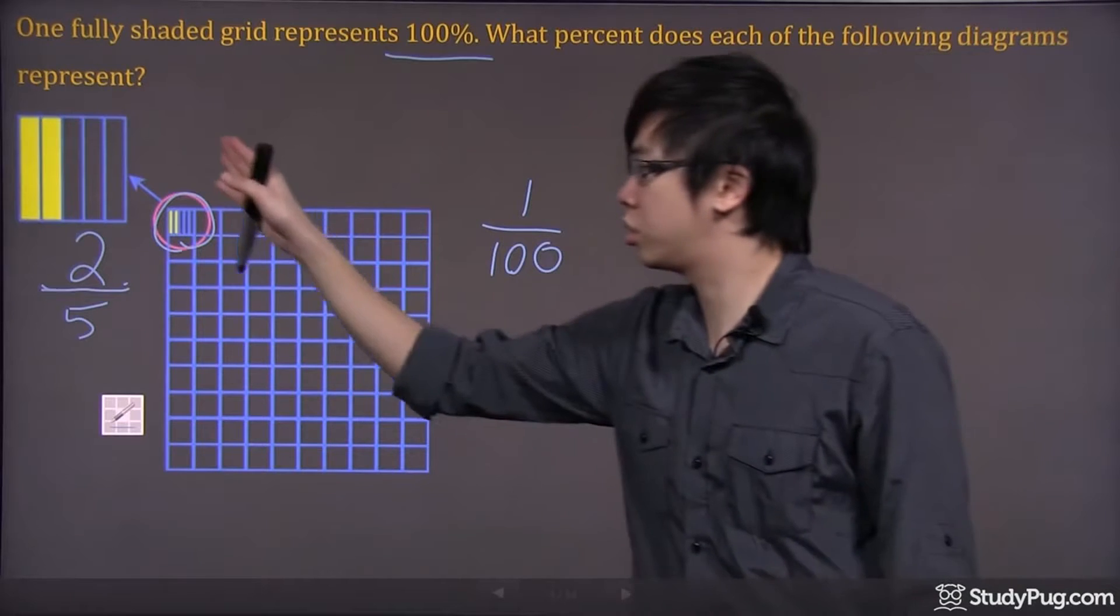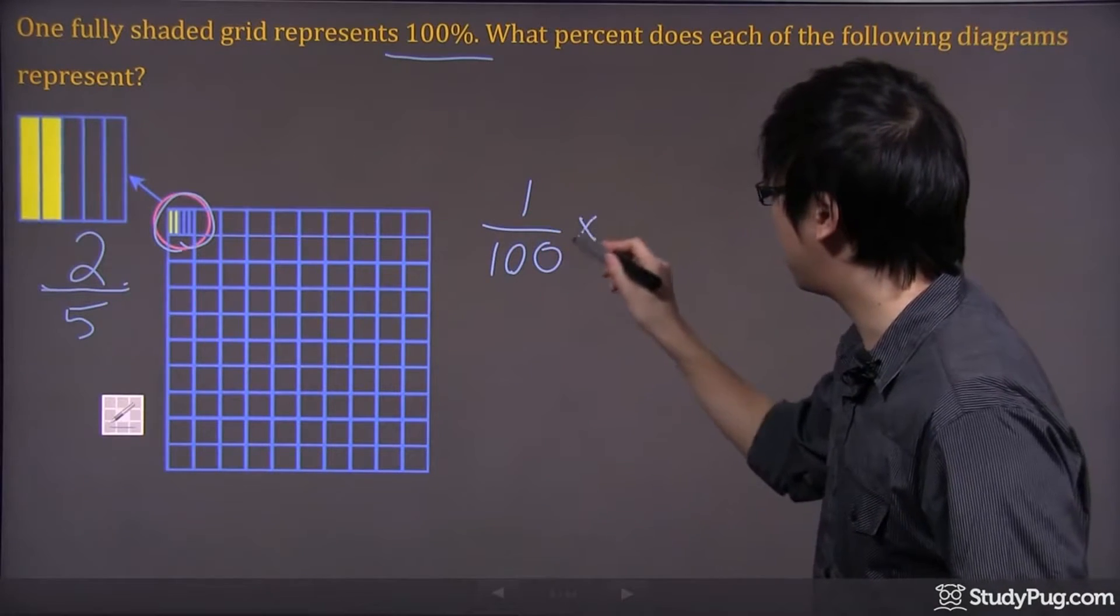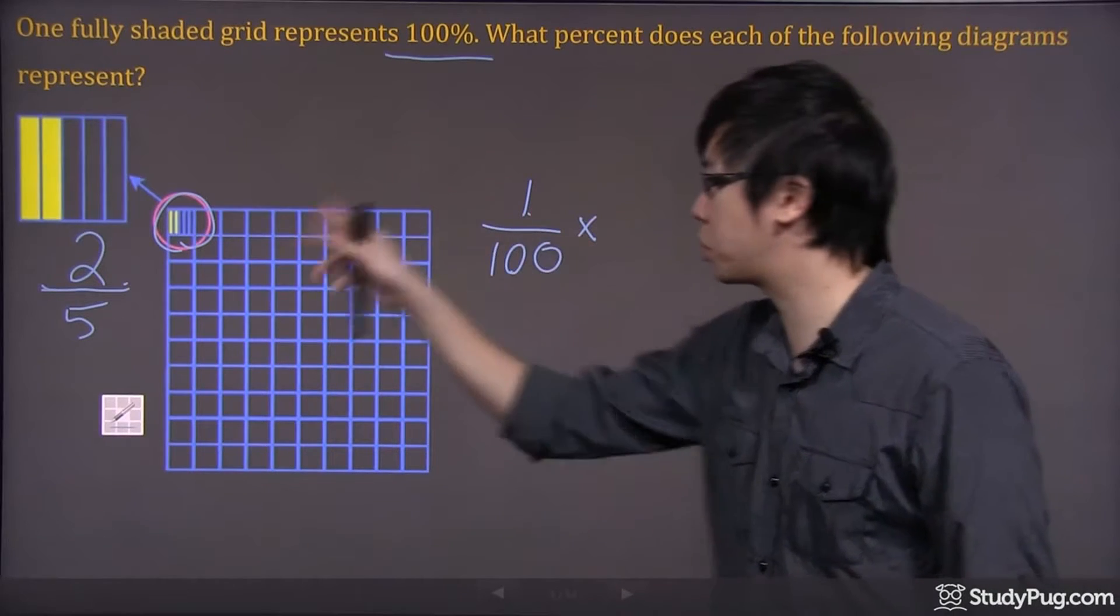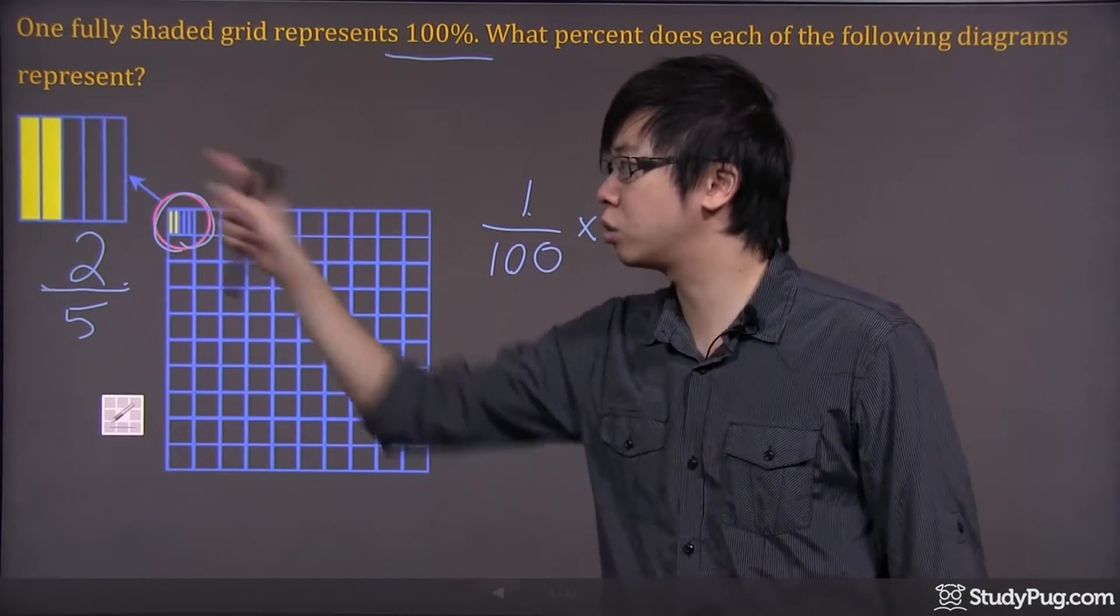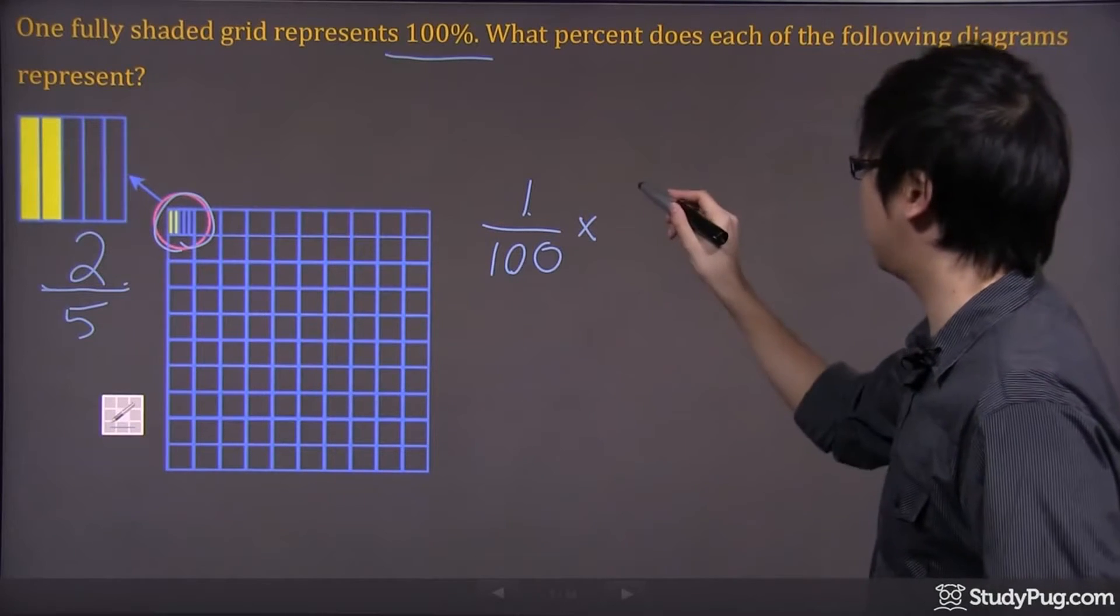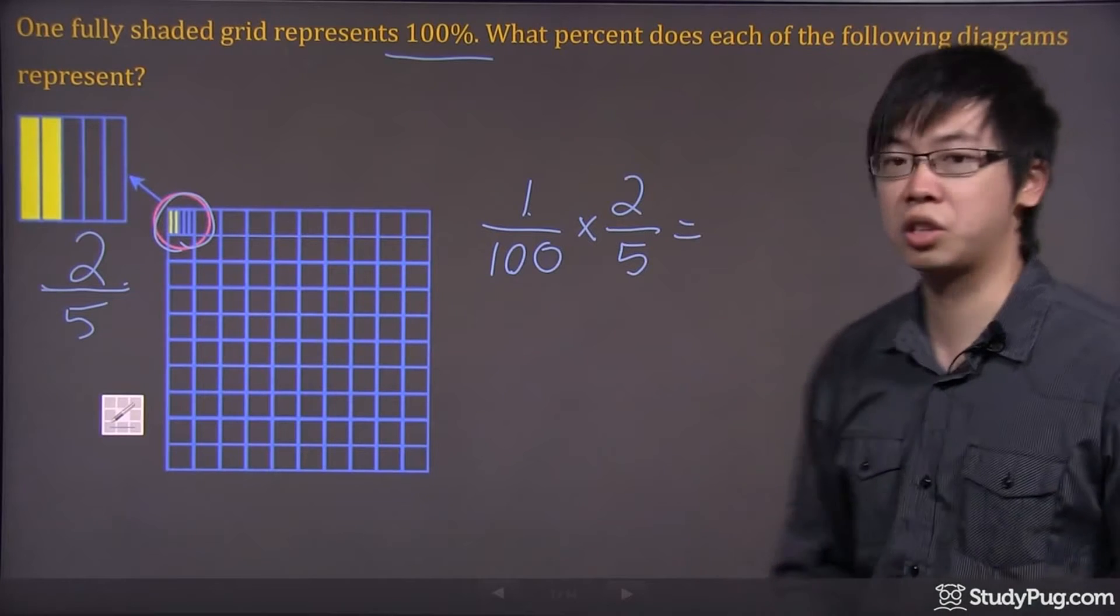So what that means is it's just two-fifths of that one over 100. So what we do is we multiply. So the one over 100 here, this one right here represents this box in here. And this box only has two-fifths of the section shaded. So you then have to multiply the two-fifths on the other side.